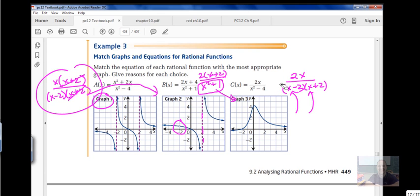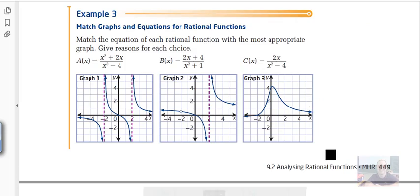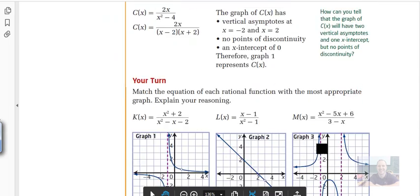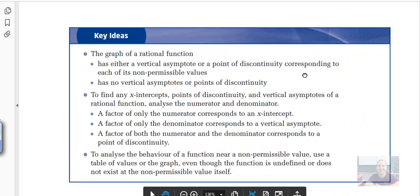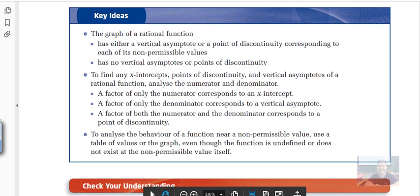Alright, so on page 451 we have the key ideas. You can take a moment to look at this, guys. Take a moment to look at the key ideas, just a bit of a summary of what we've done. Here is the factors and how it corresponds to a vertical asymptote or to a point of discontinuity right here. Here's the summary.